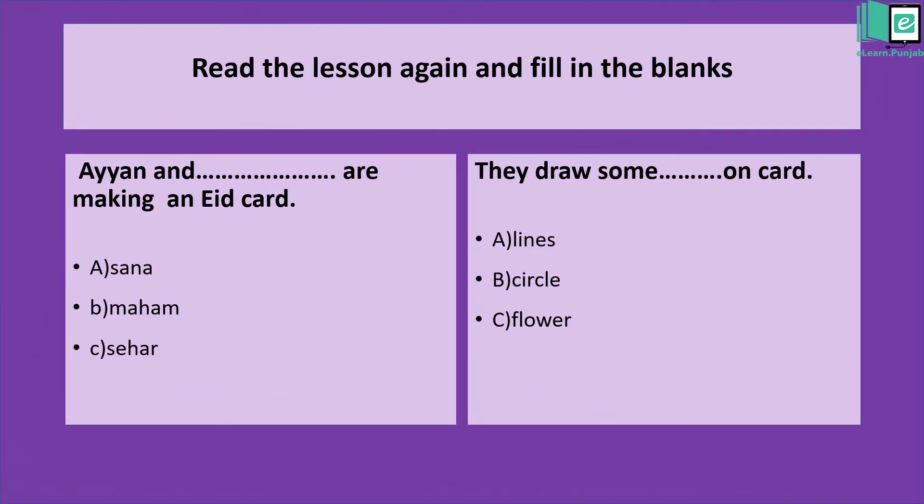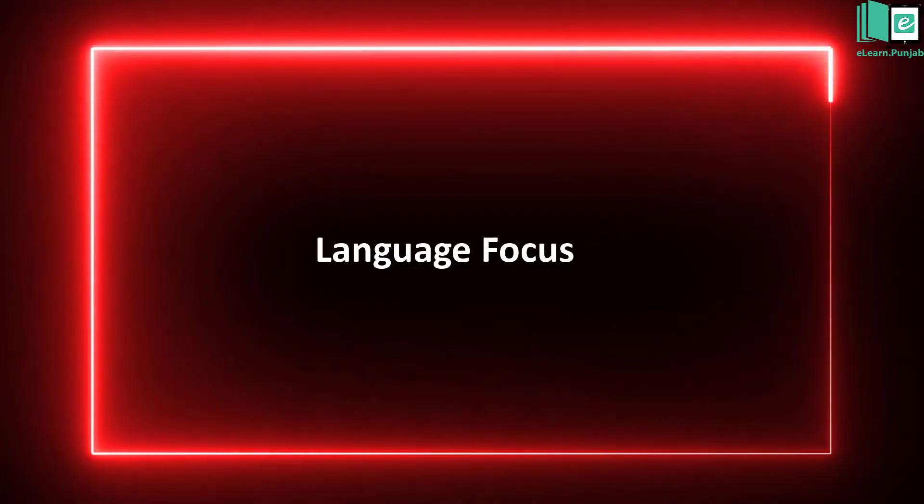Read the lesson. Read the lesson again and fill in the blanks. Ayan and blank are making an Eid card. Alsana, Maham, Seher. Good. They drew some blank on card. Lines, circle, flower. Very good kids.